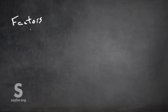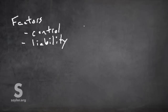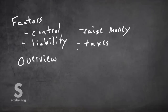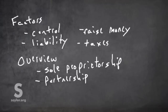So, in choosing a business organization, you need to look at several factors: how much control you want as a business owner, how big a concern liability is for debts and obligations, whether you'll be looking to raise money, and how much you're willing to pay in taxes. In this introduction to Unit 9, we provided an overview of the various forms of business organization, including the sole proprietorship, the partnership, the corporation, and the LLC.